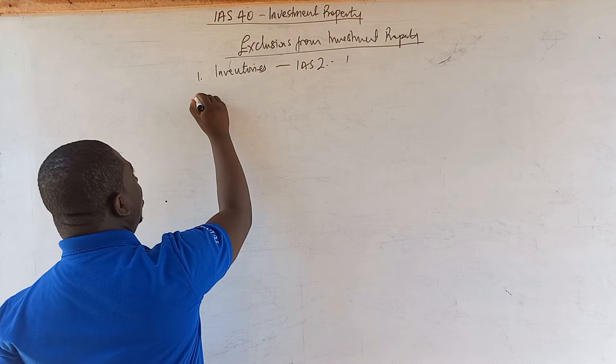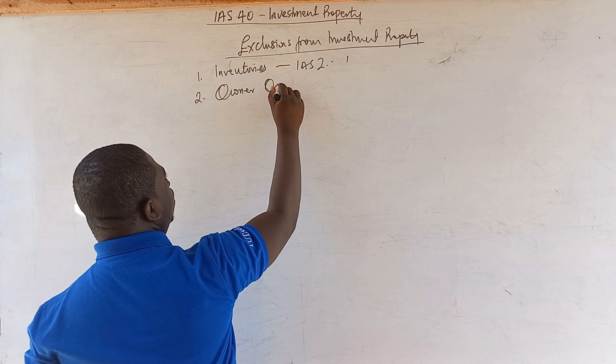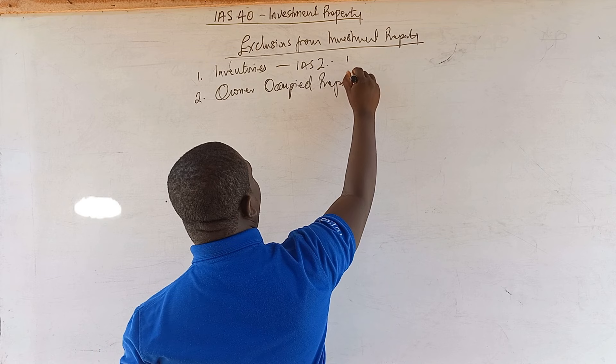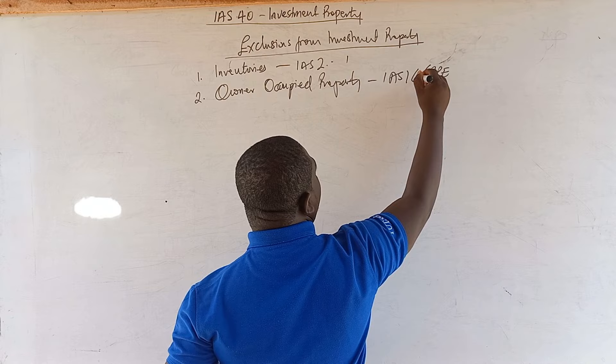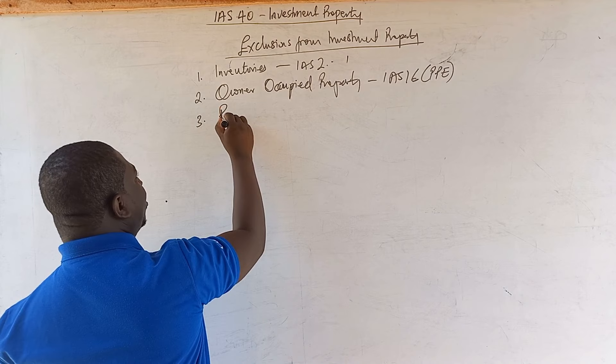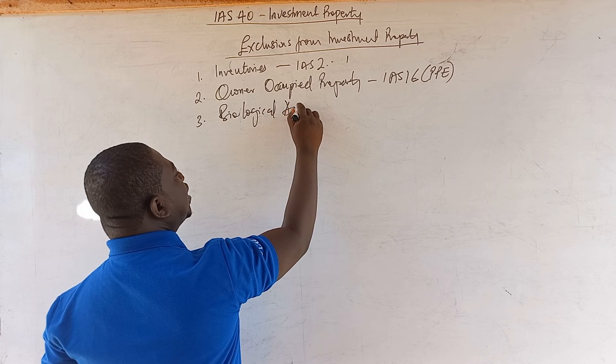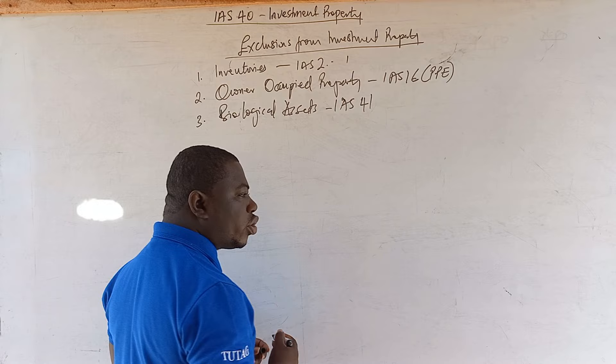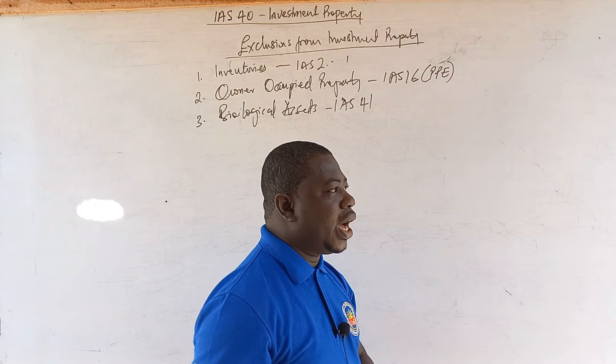Another exclusion is owner-occupied property. An owner-occupied property is regulated by IAS 16 — that is PPE. When you see owner-occupied property, it is not an investment property. The next exclusion is biological assets, regulated by IAS 41, Agriculture. Biological assets — assets used on a farm — are not part of investment property.